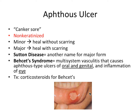This is in stark contrast to recurrent herpes simplex virus, which is either on the vermilion border in herpes labialis — a keratinized tissue — or on the hard palate or attached gingiva, also keratinized tissues, if it's intraoral recurrent herpes. That is a classic way to differentiate aphthous ulcers, which are on non-keratinized tissue, from the recurrent form of herpes simplex, which is on keratinized tissues only.